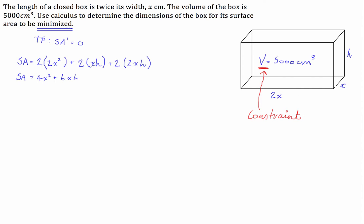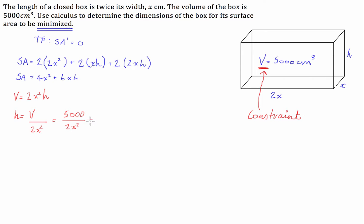So we're going to figure out what we can use this constraint to tell us. We know that the volume of this box is going to be length times width times height, which is 2x times x times h, so 2x squared h. From that, we can say that h is going to be equal to volume divided by 2x squared. So h equals 5,000 divided by 2x squared, which simplifies to 2,500 divided by x squared.